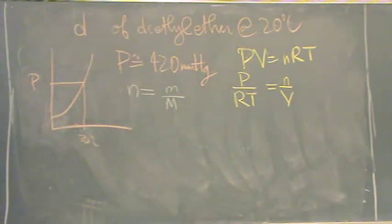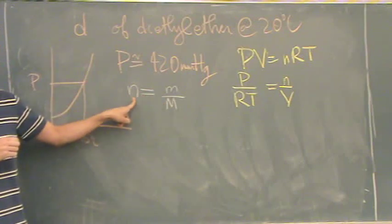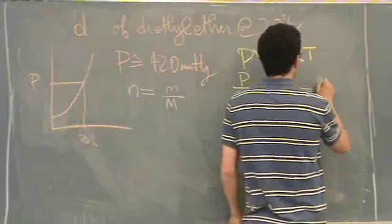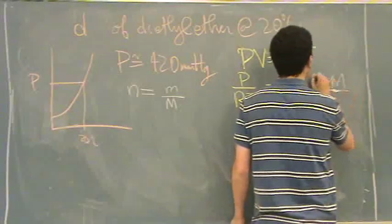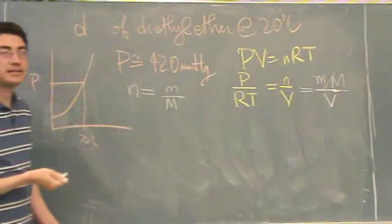So, if you take a mass divided by molar mass, you should get units of moles. So, I'm going to plug in here, mass divided by molar mass divided by volume.